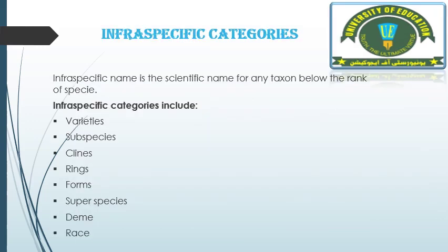Now we have infraspecific categories. An infraspecific name is the scientific name for any taxon below the rank of species. If we need to categorize any individual or organism below species level, we use infraspecific categories. There are many types of infraspecific categories, which include: varieties, subspecies, clines, rings, forms, superspecies, demes, and races.